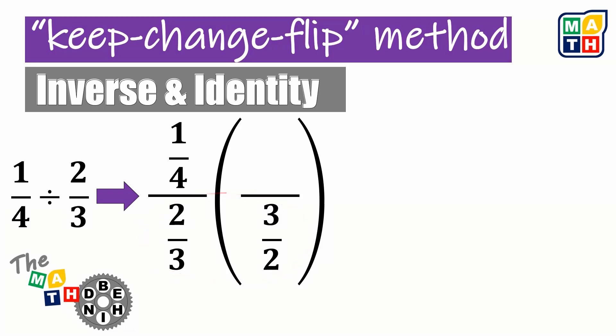To make sure that the rational expression we are multiplying to the given does not affect its value, we need to set up a numerator, which is the same value of the denominator. Hence, the numerator of the second rational expression should be 3 halves. In this way, 3 halves divided by 3 halves is just 1. This is where the identity property comes in.